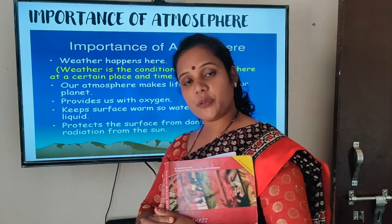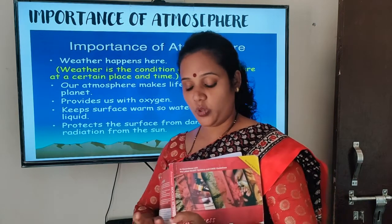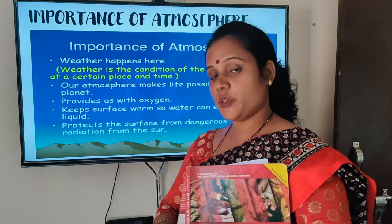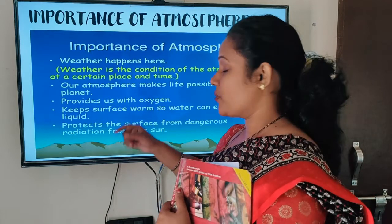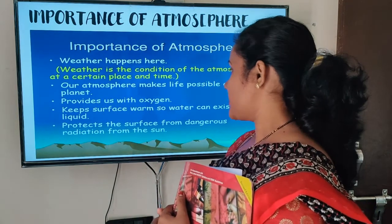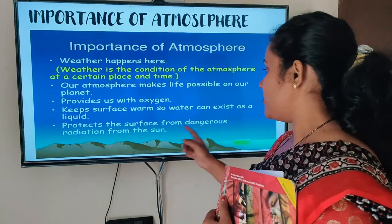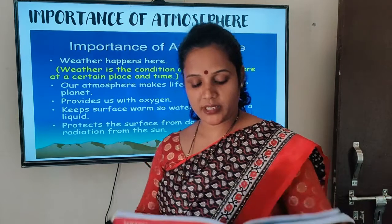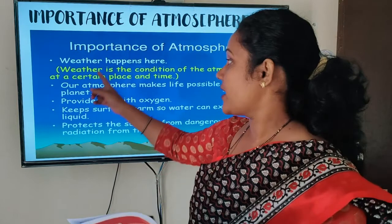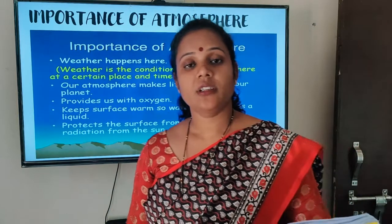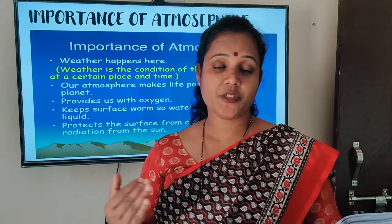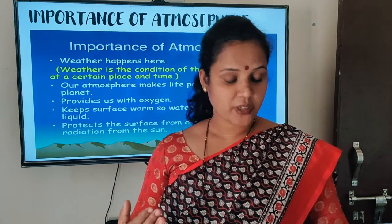Our atmosphere makes life possible on our planet. Because of the atmosphere, there is life on earth — water is available, we have moderate temperature, and it provides us oxygen. It keeps us safe and water can exist as a liquid. It protects the surface from the dangerous radiation of the sun. The first key point is that weather happens according to the atmosphere, and temperature remains moderate as the layer is protecting us.